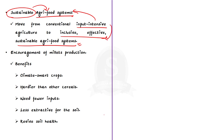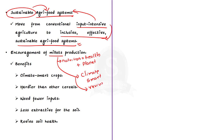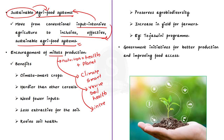Millets have received renewed attention as crops that are good for nutrition, health, and the planet. They are climate-smart crops, hardier than other cereals, need fewer inputs, are less extractive for the soil, and can revive soil health. Their genetic diversity ensures agro-biodiversity is preserved, and they increase farmer yields. The Tejasvini program of Madhya Pradesh showed that growing millets meant a nearly 10 times increase in income for farmers. Therefore, millet production should be encouraged, as all parties involved are beneficiaries.